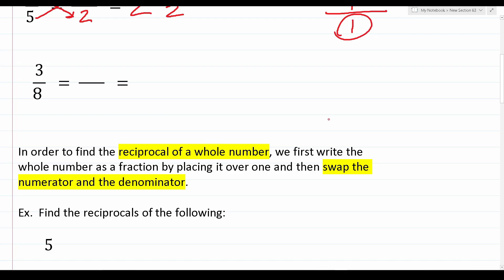Now let's find the reciprocal of three eighths. Again, we're just swapping the numerator and the denominator. Since eight is the denominator, we move it to be the numerator, and since three is the numerator, we make it the denominator. So the reciprocal of three eighths is simply eight over three, which is an improper fraction given that the numerator eight is bigger than the denominator three.